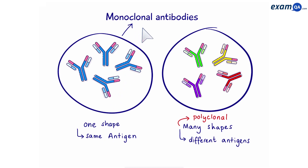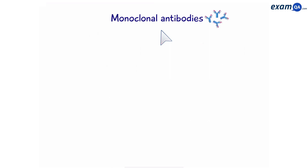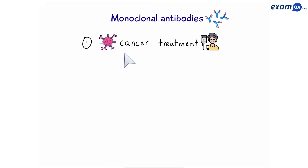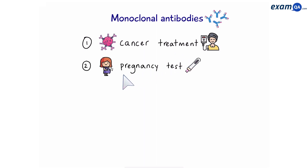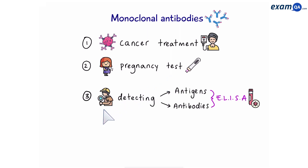For reference, the other group are called polyclonal. So what uses do monoclonal antibodies have? Number one, we can use them for cancer treatment. Number two, they're found in pregnancy test kits. And number three, we can use them to detect the presence of antigens or antibodies in someone's blood. This is done by the ELISA test.